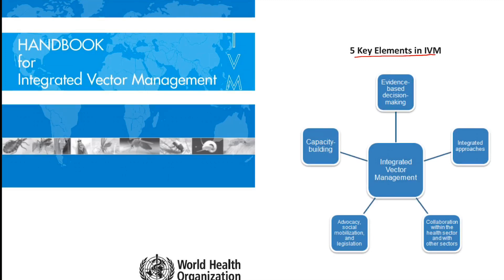The five key elements of Integrated Vector Management are: first, an Integrated Approach — integration of non-chemical and chemical methods or other disease control measures; second, collaboration within health sectors and other sectors for optimal use of resources, planning, monitoring and decision making; third, evidence-based decision making backed by proper research, planning, surveillance and evaluations; fourth, capacity building — ensuring adequate human resources are trained at national and local level; and fifth, advocacy, social mobilization and legislation as regulatory controls for public health and community empowerment.